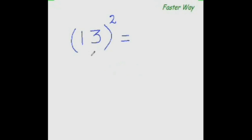To find the square of any number from 11 to 19, all you need to do is add the units digit to the entire number. So 3 plus 13 is 16. These are the first two digits of your answer.